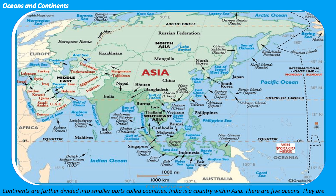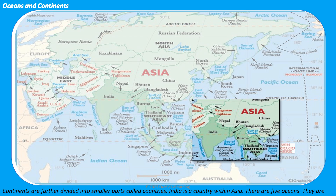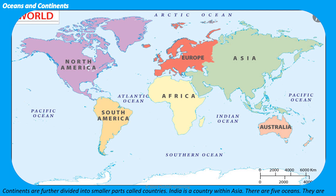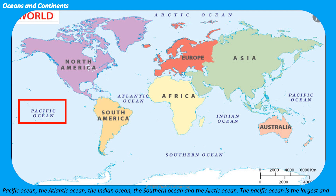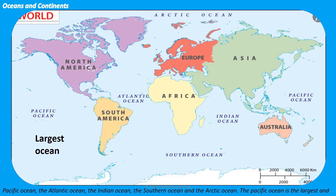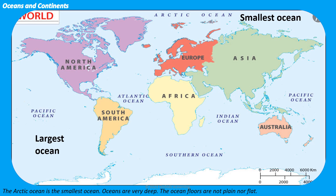India is a country within Asia. There are five oceans. They are the Pacific Ocean, the Atlantic Ocean, the Indian Ocean, the Southern Ocean, and the Arctic Ocean. The Pacific Ocean is the largest and the Arctic Ocean is the smallest.